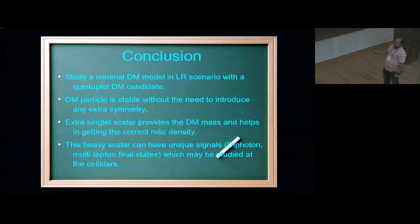With this, I come to the conclusion of my talk. What we have done here is, we are studying a minimal dark matter model in LR scenario with a quintuplet dark matter. It's stable by itself, we don't need to introduce any extra symmetries. This extra singlet that I introduced helps in getting the dark matter mass and also in getting its correct relic density at low dark matter masses. And it has unique collider signatures which may be studied. Thank you.